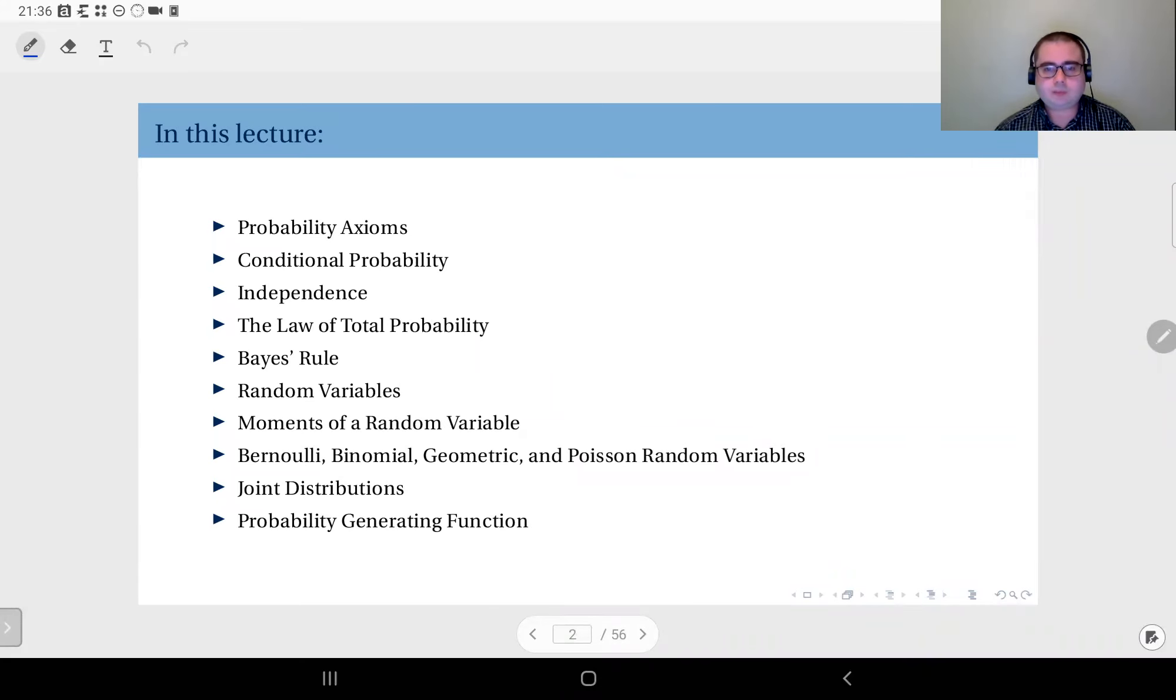This week we are talking about probability theory and we will start with the foundations: the axioms of probability. Then we'll define conditional probability and talk about independence, and then we will derive the law of total probability, which is quite useful, and also Bayes' rule.